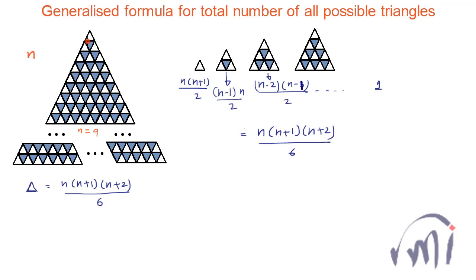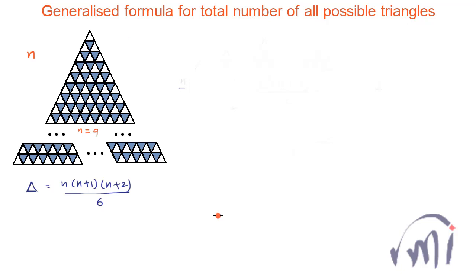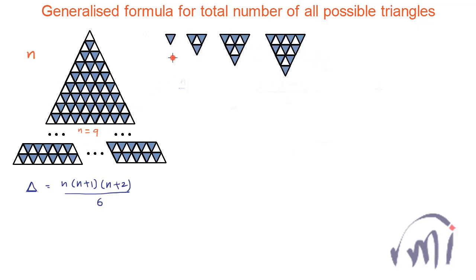We also have triangles which are facing downwards, where the third vertex is below the horizontal line. Now let us count all those triangles. The counting is slightly different when n is odd and when n is even. When n is odd, the number of smallest inverted triangles will be equal to the n minus 1st triangular number, because they also form triangular numbers. The number of triangles in the base is just 1 less than n, so the count equals n minus 1 multiplied by n divided by 2.